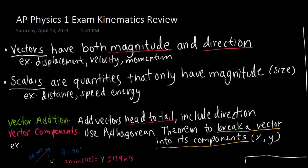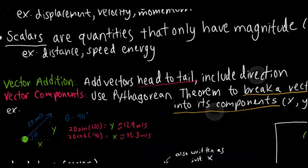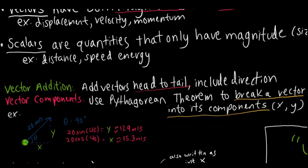The first thing we have to recognize is some basic things regarding physics foundation. We need to be able to recognize the difference between a vector and a scalar. Vectors have both magnitude — or size — and a direction. Examples of that would be displacement, velocity, and momentum. Scalars are quantities that only have magnitude, so that's stuff you don't have to specify direction for, like speed, energy, and distance. When adding vectors, you need to add them from head to tail and also include the direction.